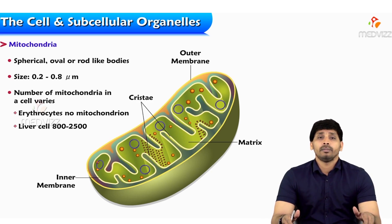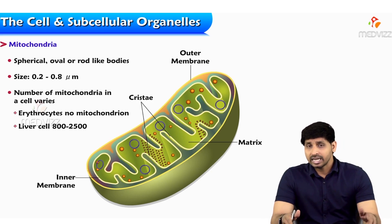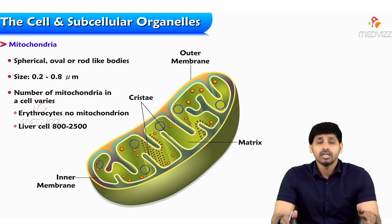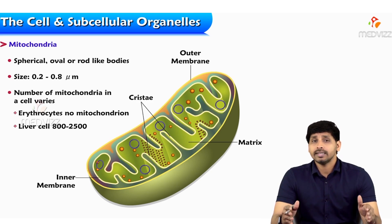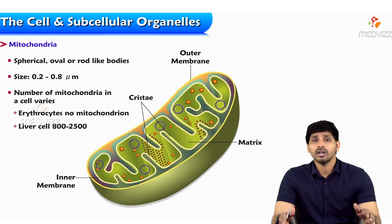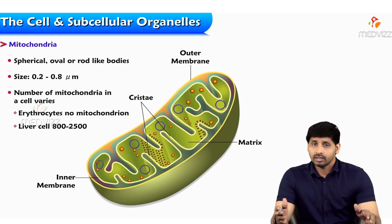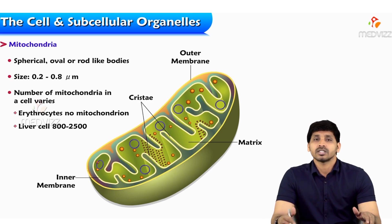Fatty acid degradation also takes place in mitochondria via beta oxidation, producing the end product acetyl-CoA. This acetyl-CoA enters into the Krebs cycle. It is easy for degraded fatty acids to enter the Krebs cycle, which is why fatty acid degradation and the Krebs cycle occur in the same subcellular organelle.